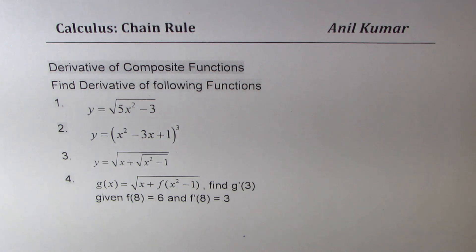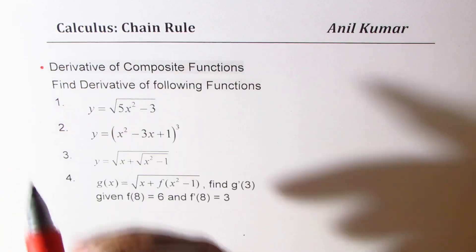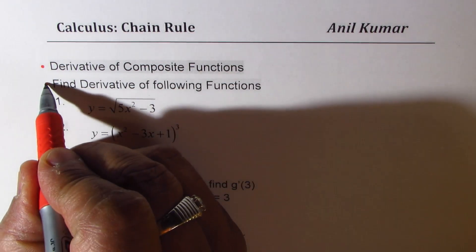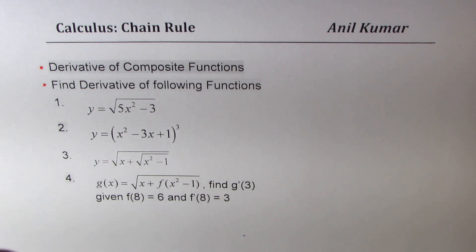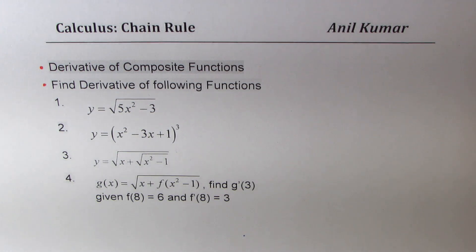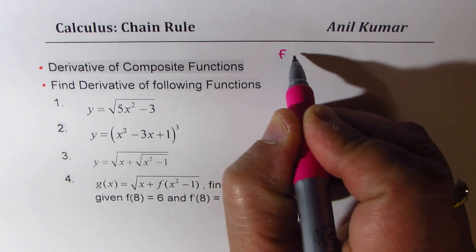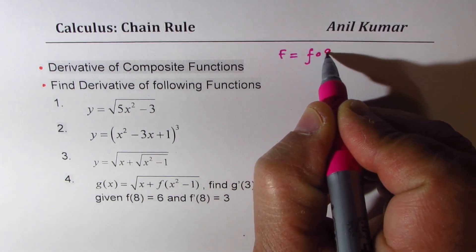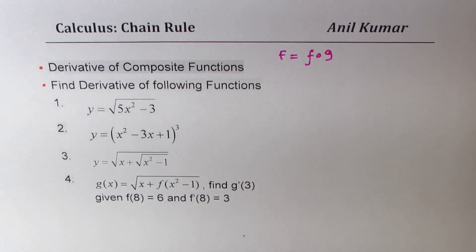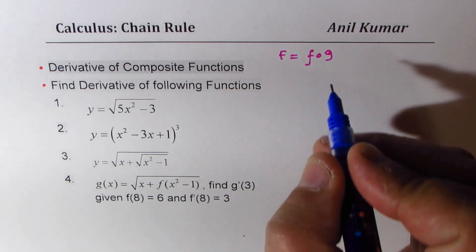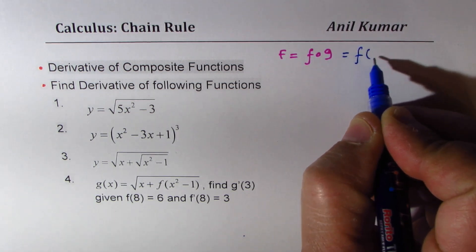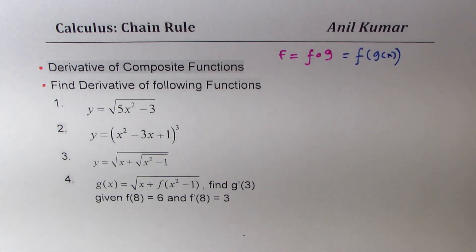Chain rule is applicable to all composite functions. We'll discuss composite functions and then take up examples to practice the chain rule. A composite function is made up of two or more functions. We can say a function F equals f of g, and this could be written as f of g of x.